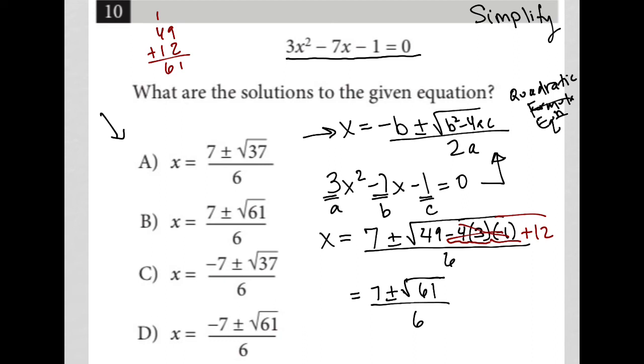I look at my answer choices and see that the answer that matches this is choice B: x equals 7 plus or minus square root 61 all over 6.